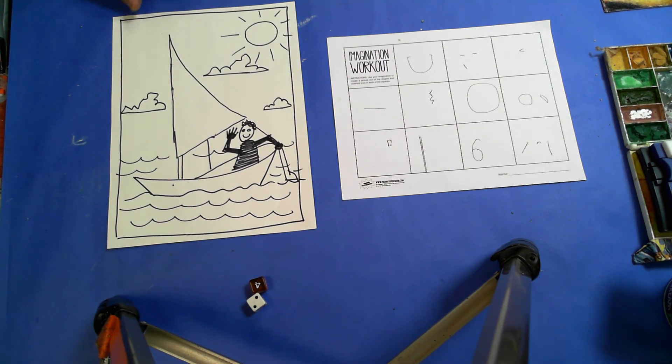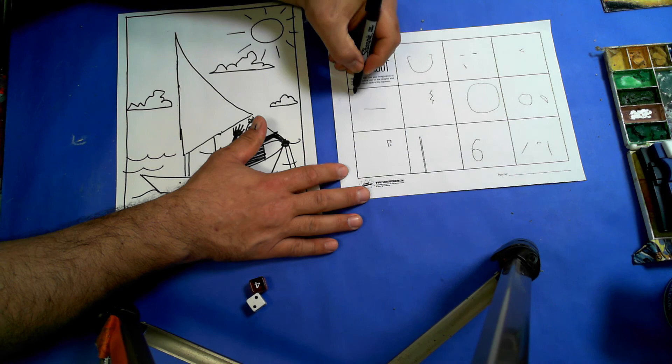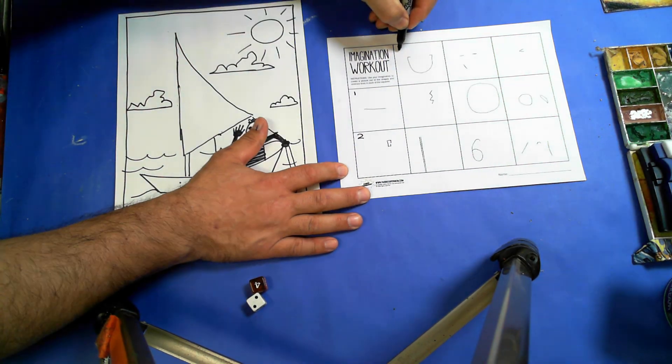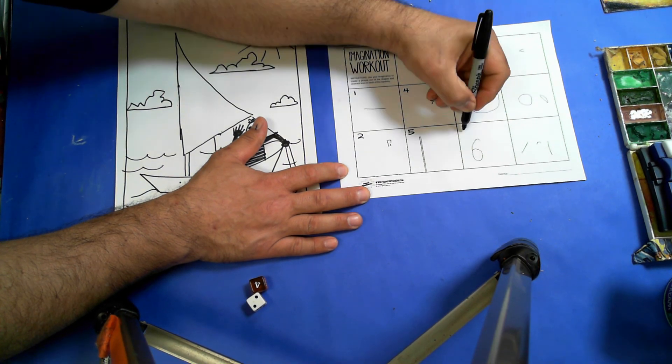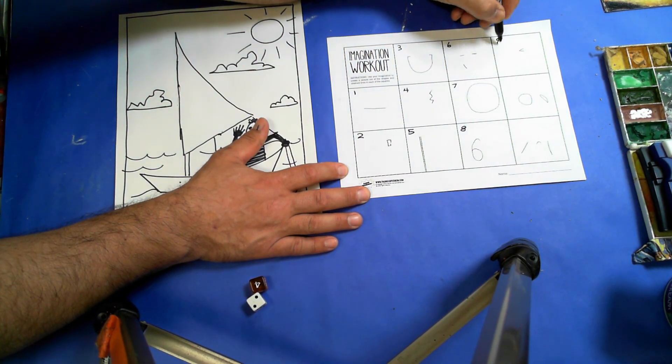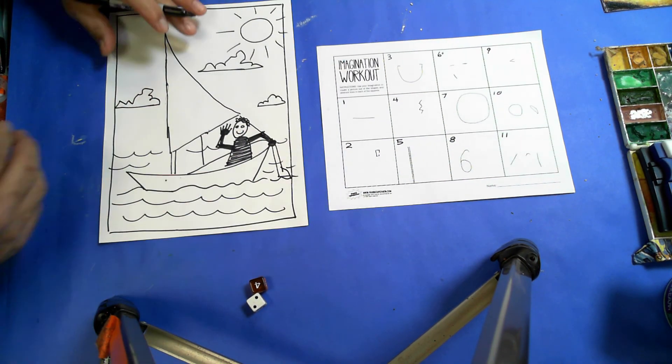And there we have my Lakeview Brain Break. I rolled a six, which meant it was that one. So if I number these, one, two, three, four, five, six, seven, eight, nine, ten, eleven. And all I have to do is re-roll.